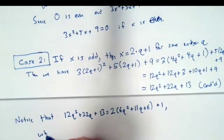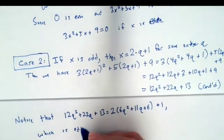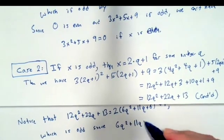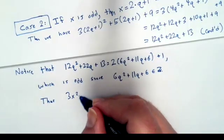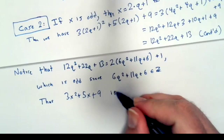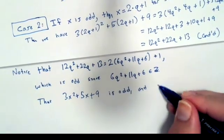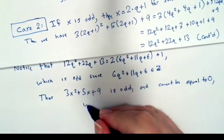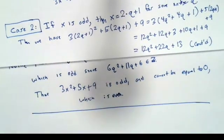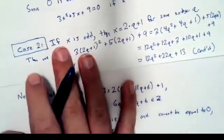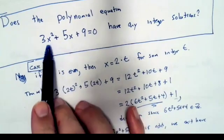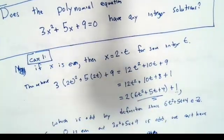Which is odd, since 6q squared plus 11q plus 6 is an integer. So 3x squared plus 5x plus 9 is odd, because that's what we started with, and cannot be equal to 0, which is even. It's a little long — it's definitely the most complicated thing we've done — but you can show that there's no integer that will make this expression equal to 0.